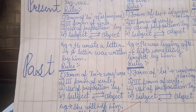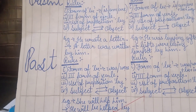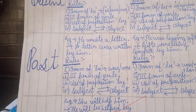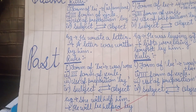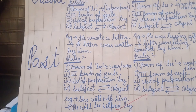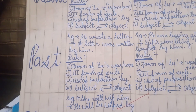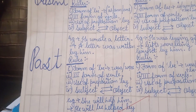Moving on to Past Simple, taking the example: 'He wrote a letter.' The passive will be: 'A letter was written by him.' Since it is Past Simple, we take 'was' or 'were' as the form of 'be.' The remaining three rules again stay the same.